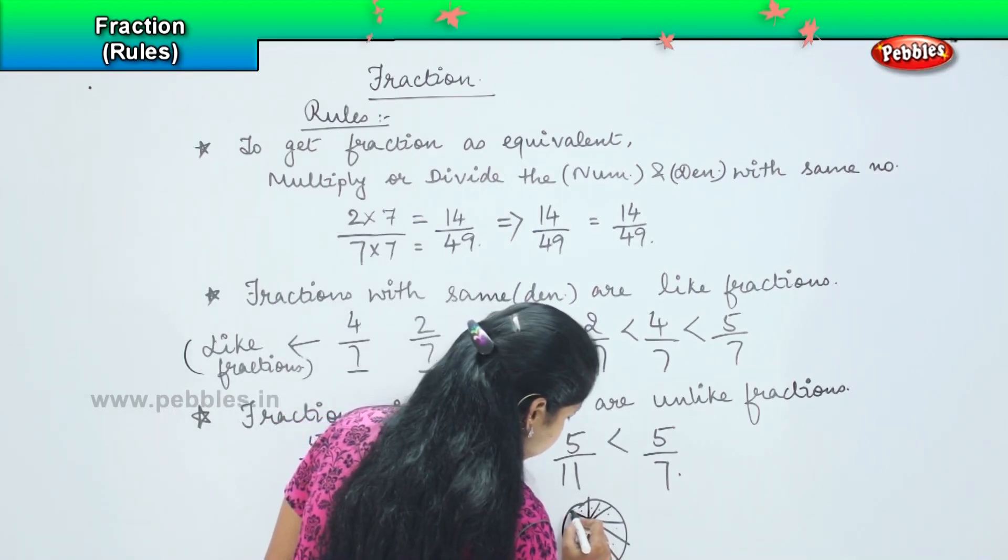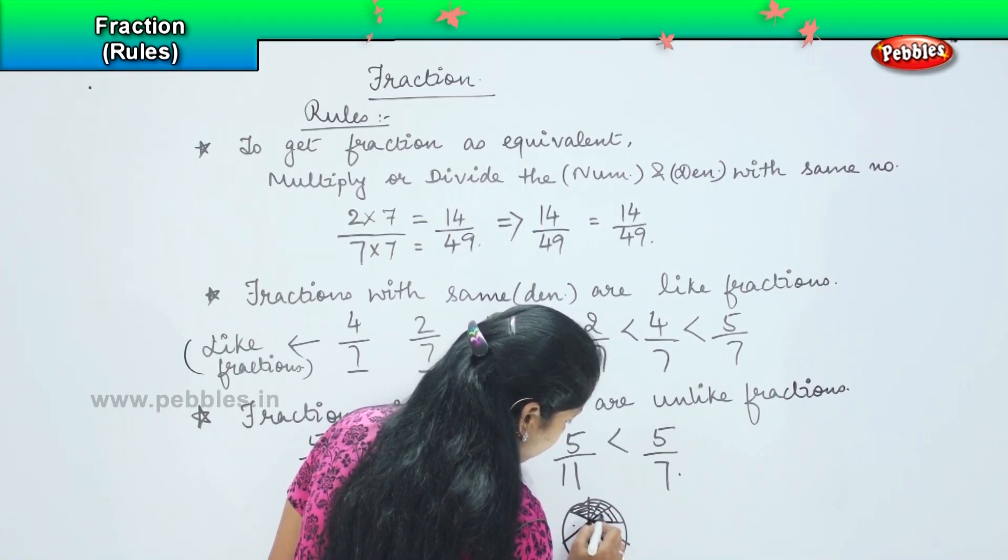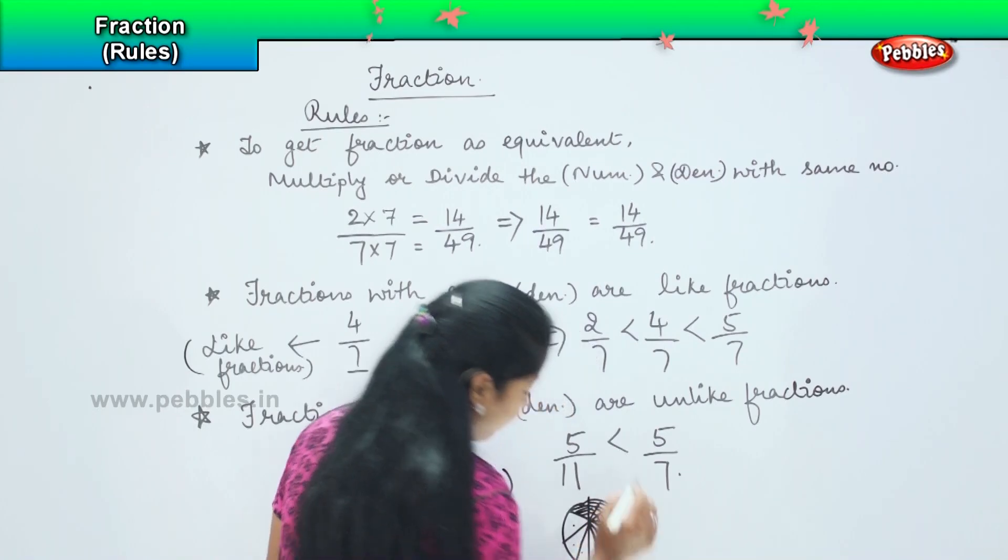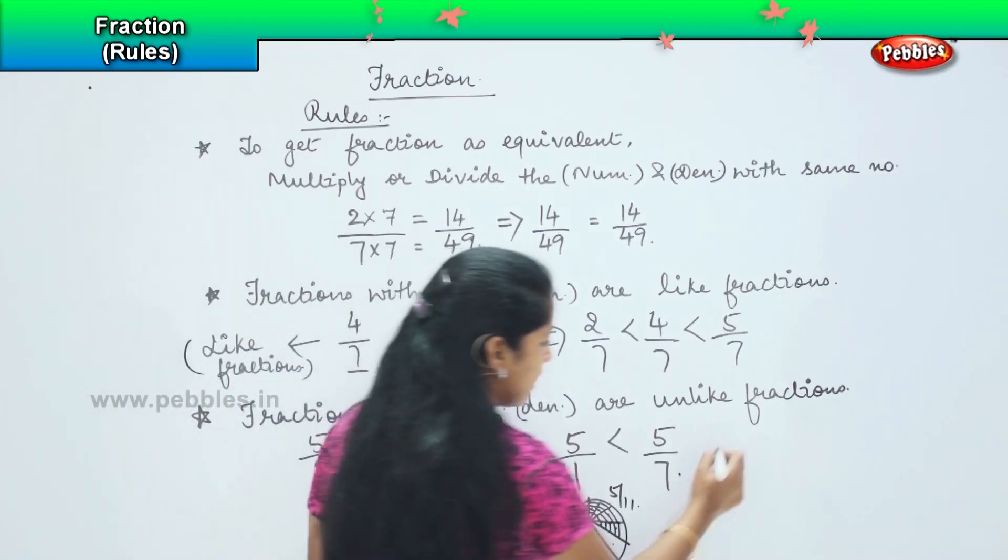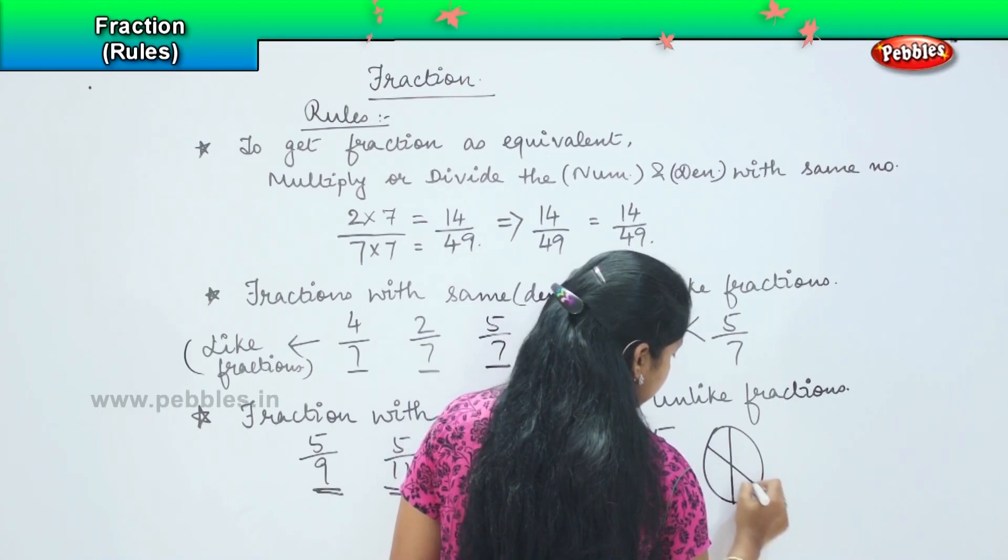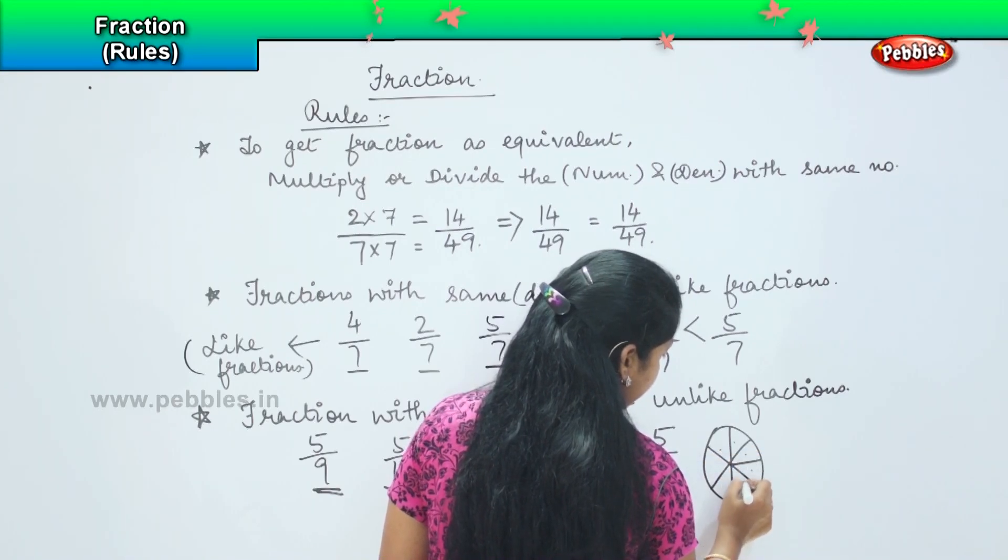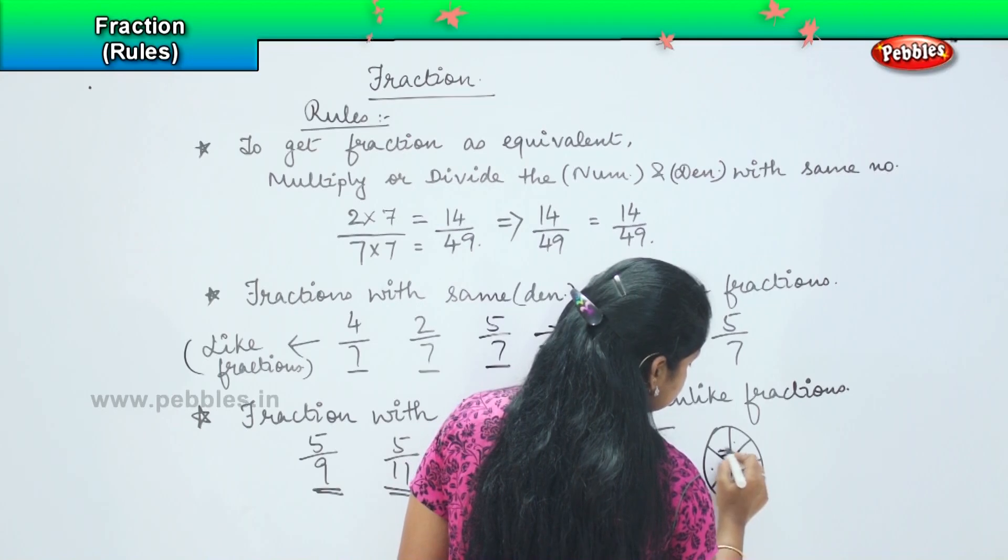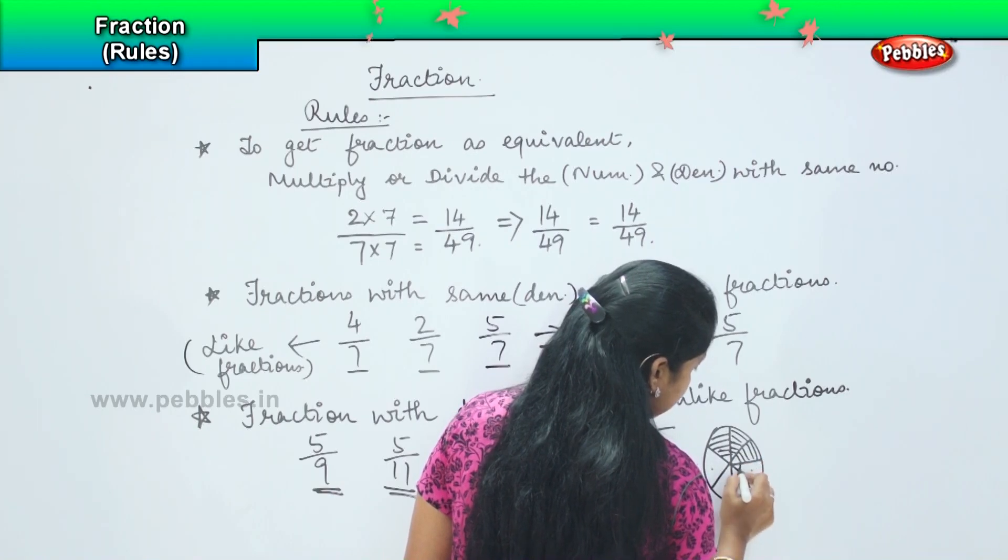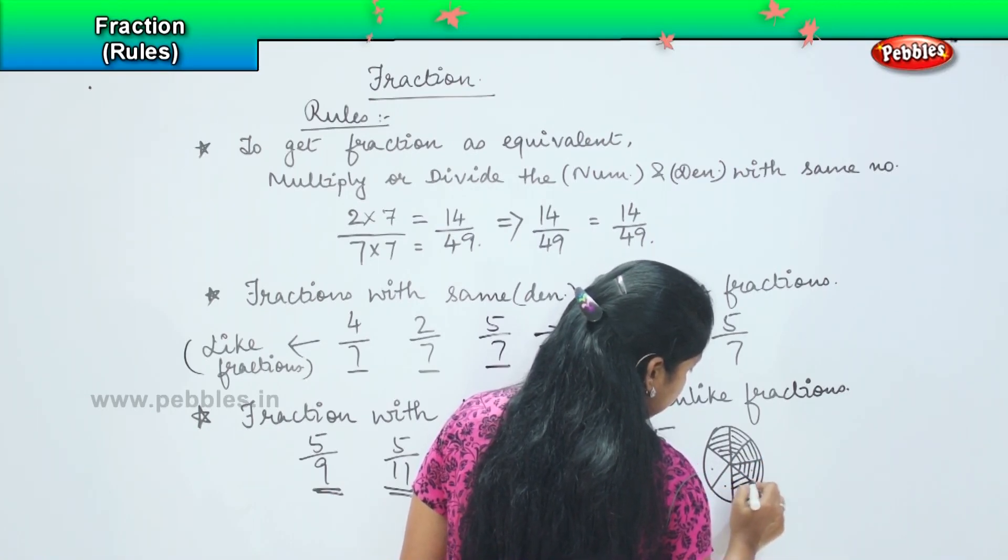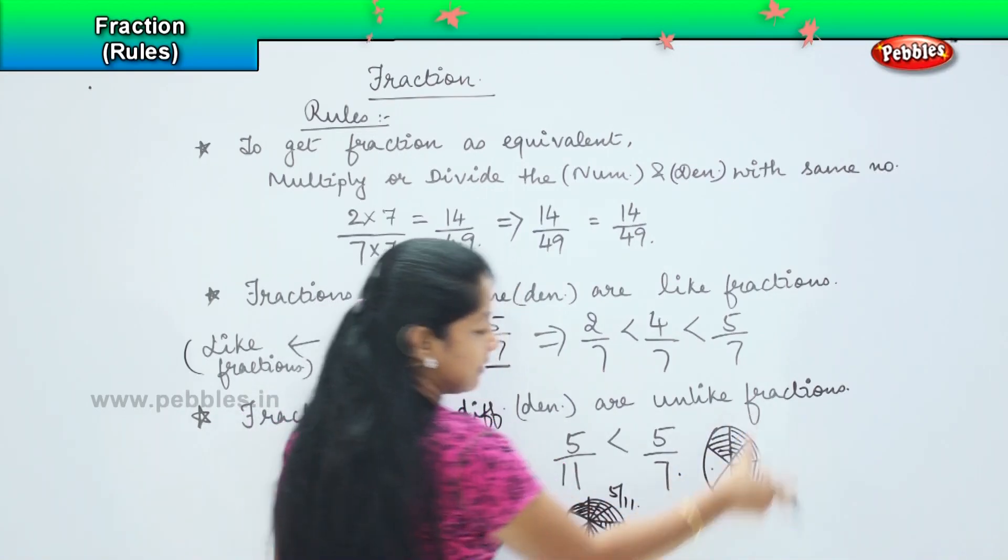Now if I am going to shade 5 parts, say 1, 2, 3, 4, 5. So this can be written as 5 by 11. Now the same thing, I am going to divide this into 7 parts. So this becomes 1, 2, 3, 4, 5, 6 and 7. And now if I am shading 5 by 7, 2, 3, 4 and 5. So if you see this portion, this is less than this one.